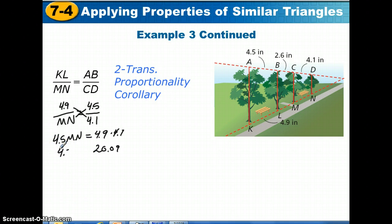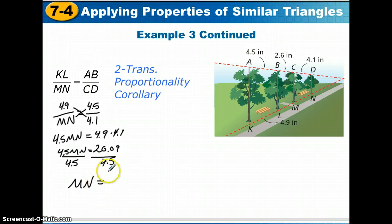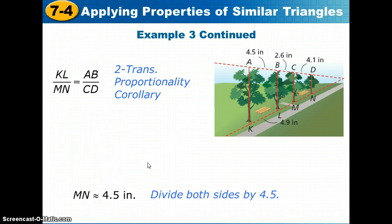4.9 times 4.1 gives us 20.09. So, we need to now take this equation and divide by 4.5. In doing so, we get that MN would have the length of approximately 4.5 inches.